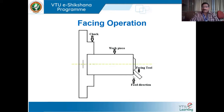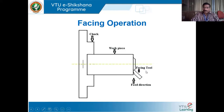There are two types of facing: rough facing and finish facing, similar to rough and finish turning. For rough turning, more depth of cut is given with less feed. For finish turning, less depth of cut with more feed. In facing operation, depth of cut is given by moving the tool parallel to the axis; somewhere around two to three millimeters of material is removed in one go.